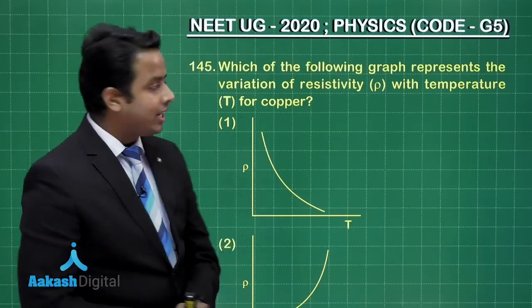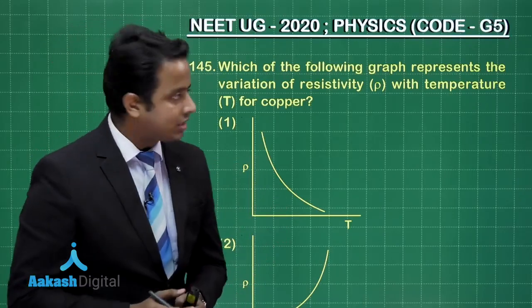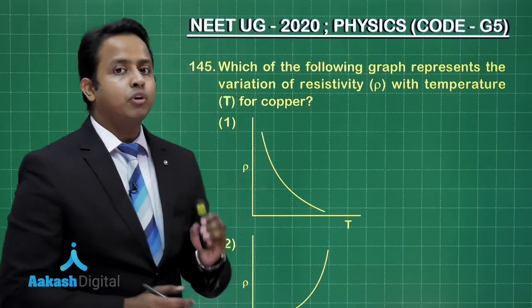Question number 145 says, which of the following graph represents the variation of resistivity with temperature for copper?